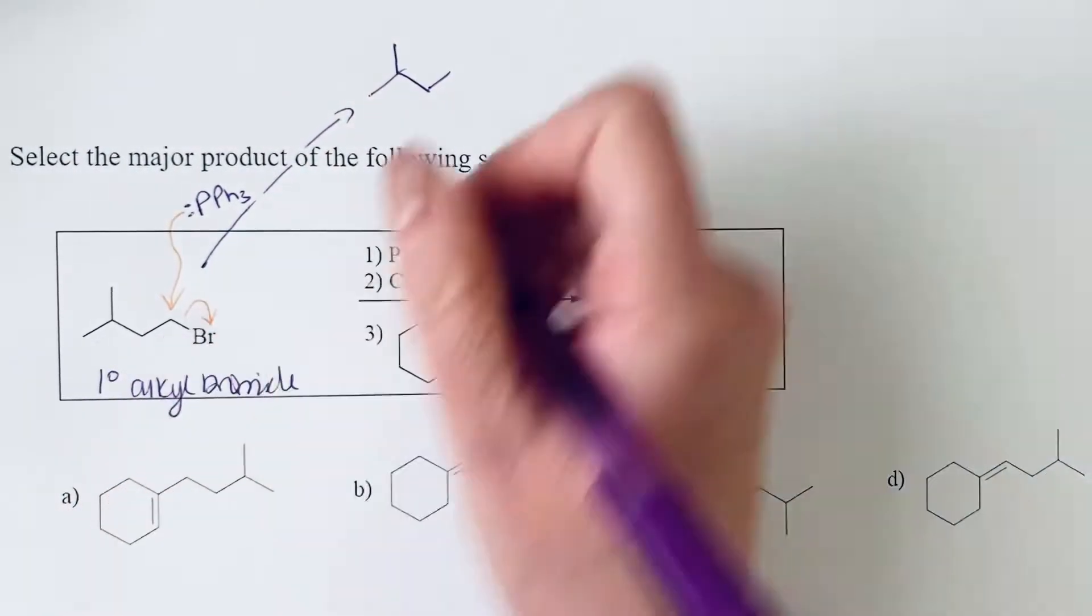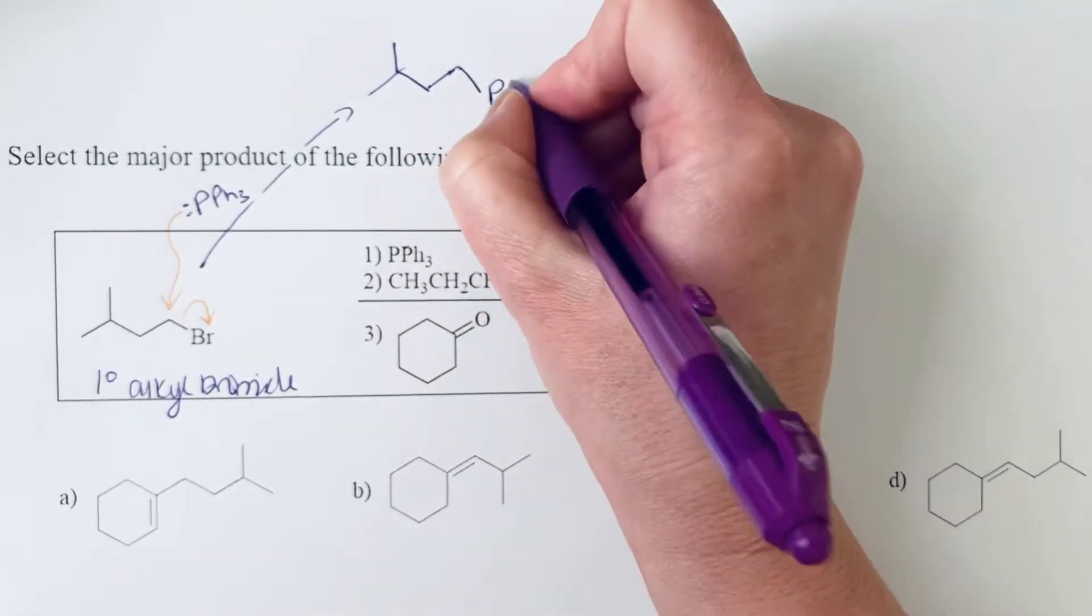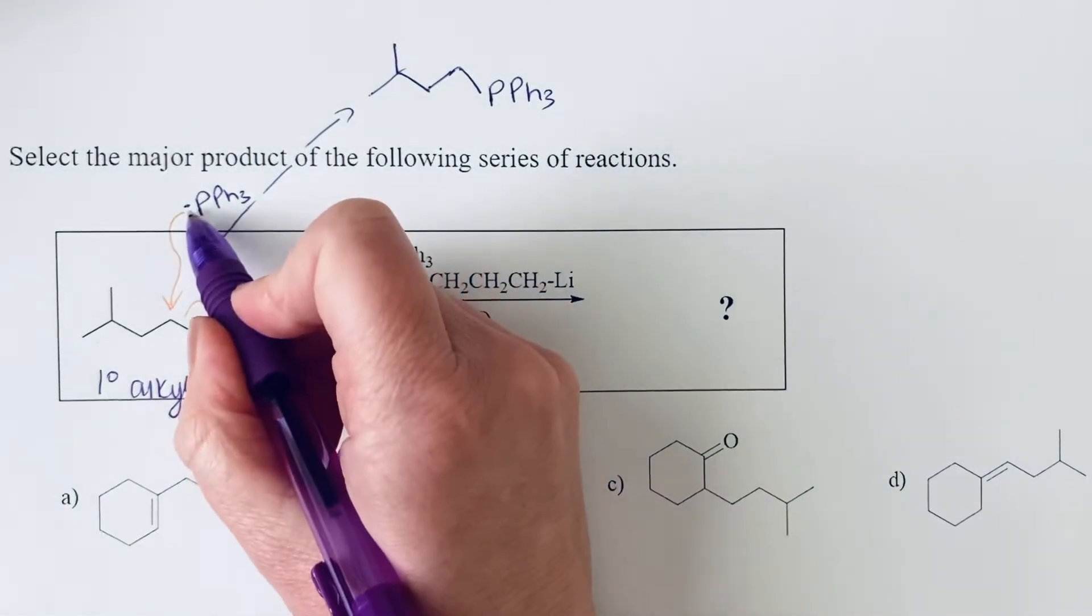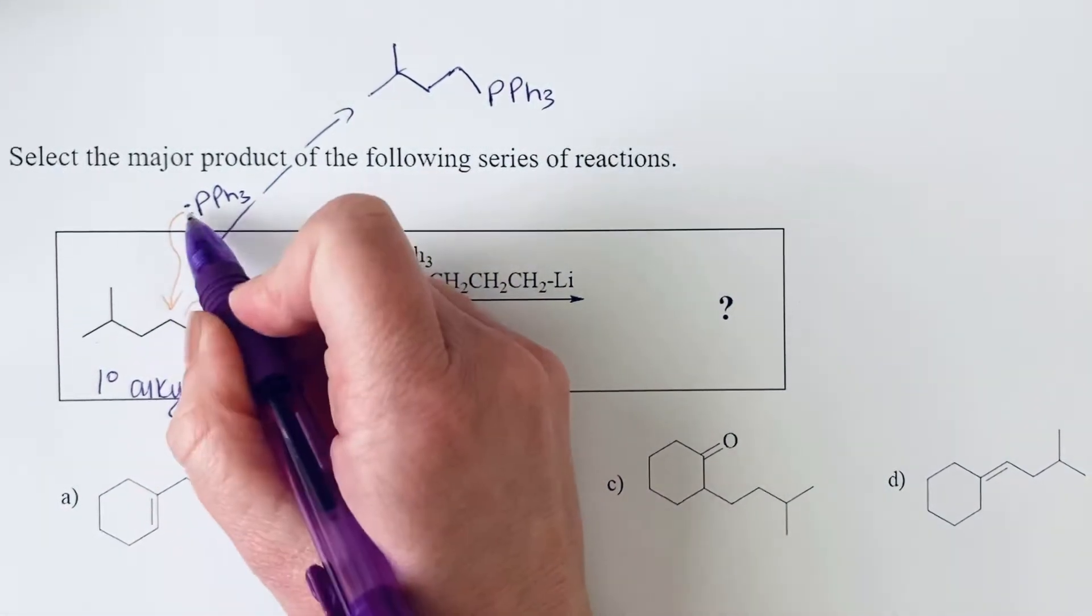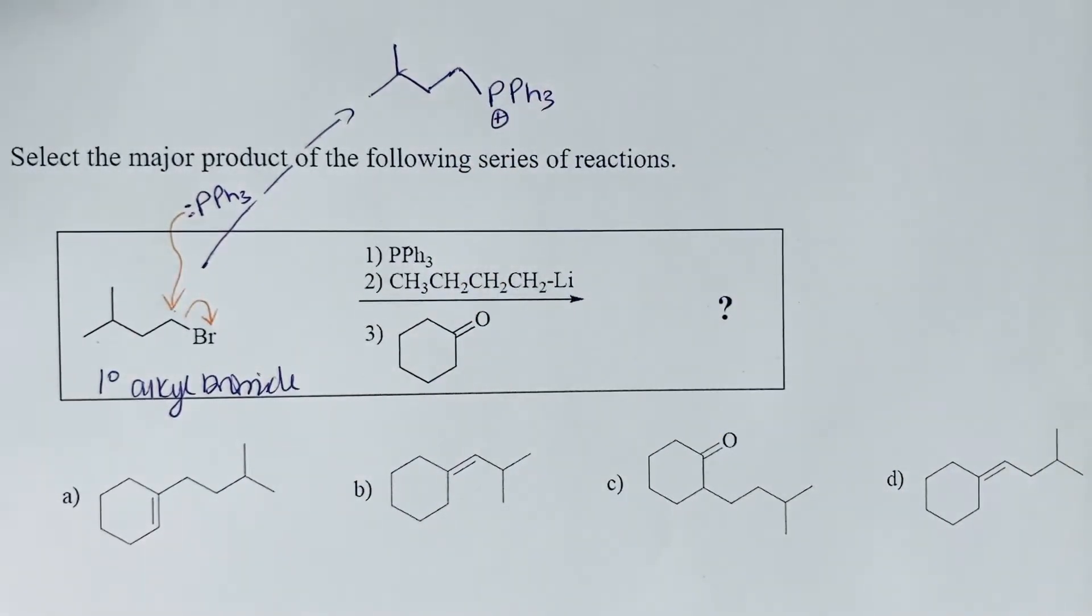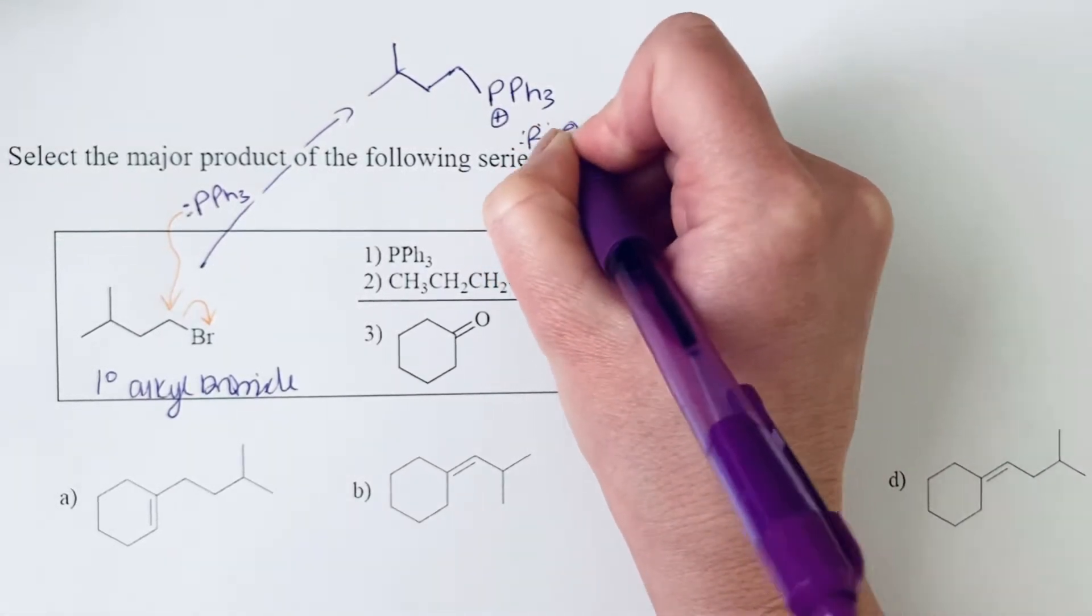So here where we had the bromine, we now have a bond to phosphorus, which still has its three phenyl rings. And since it gave up electrons in this attack to form the covalent bond, it now has a positive charge. We have bromide as a counter ion. So this is a salt.